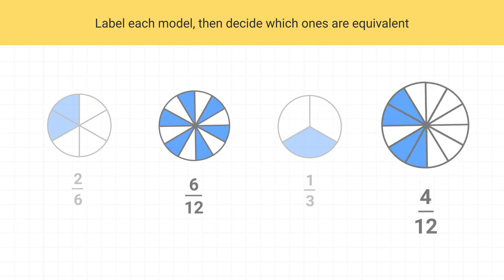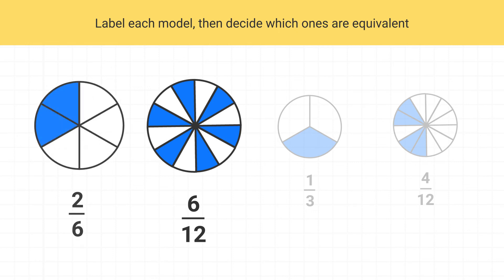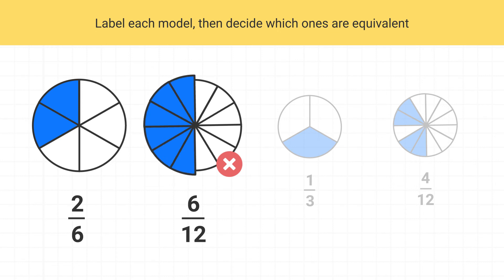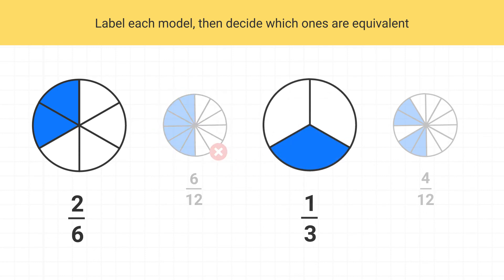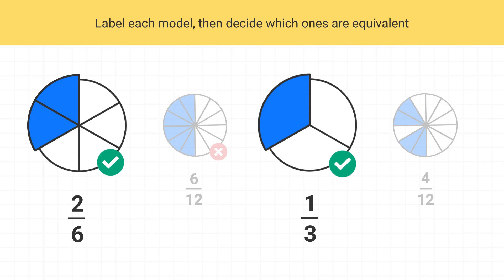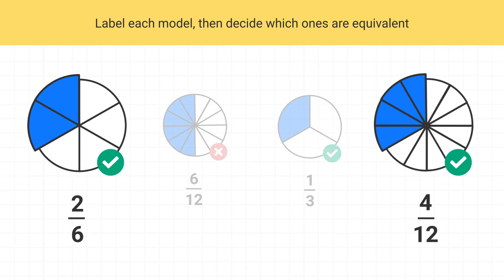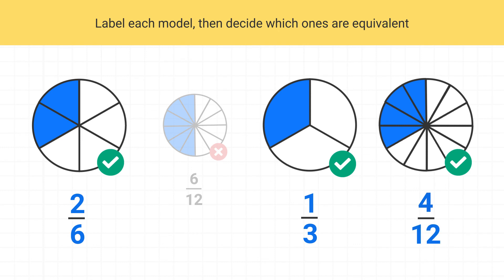Let's start by looking at the six-twelfths. Is this equivalent to the two-sixths? No — if you were to move all of those pieces together, you see that more of this circle is shaded than in our two-sixths model. Now let's look at one-third. Is this equivalent to two-sixths? Yes — if you imagine moving this shaded piece around, you can see that it's exactly the same as two-sixths. Finally, what about four-twelfths? Yes — if you were to move these pieces around and then rotate them, you can see this amount is the same as two-sixths. So two-sixths, one-third, and four-twelfths are all equivalent fractions.